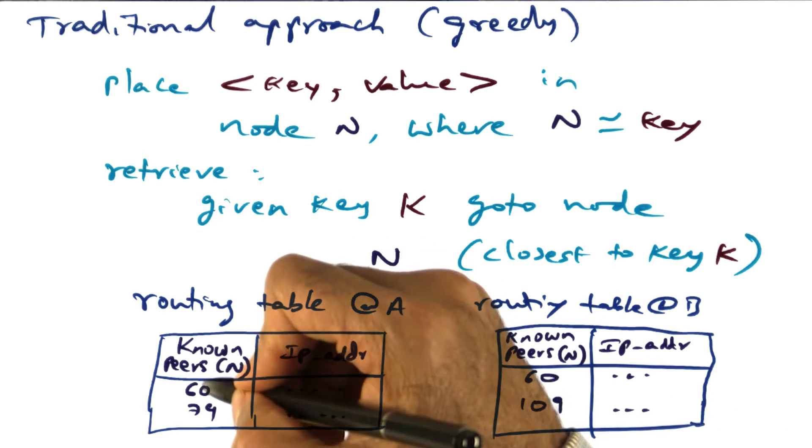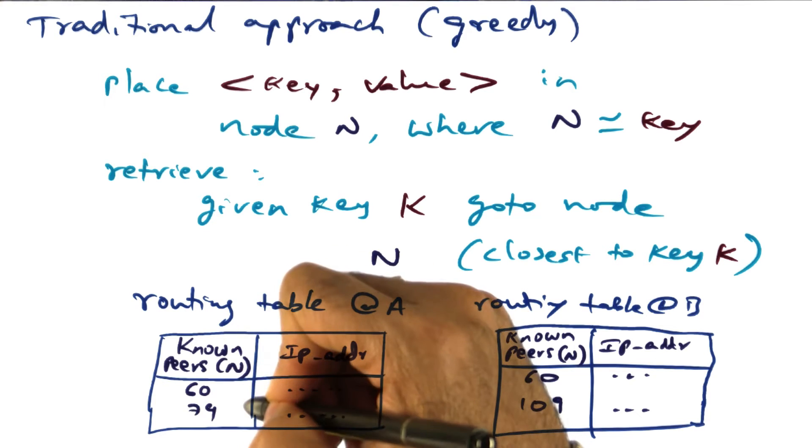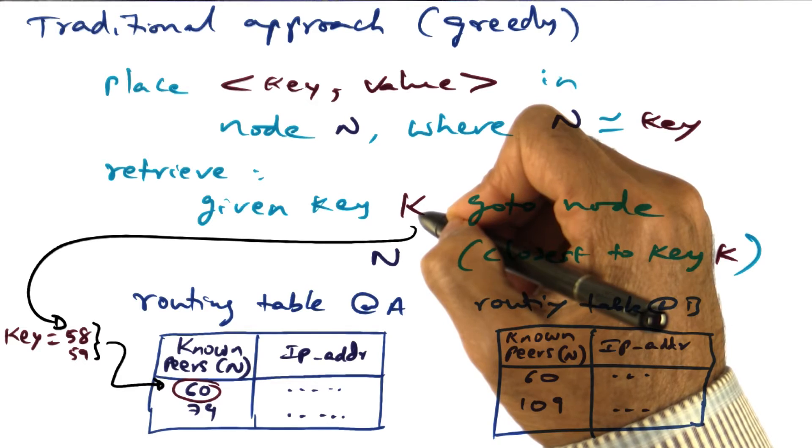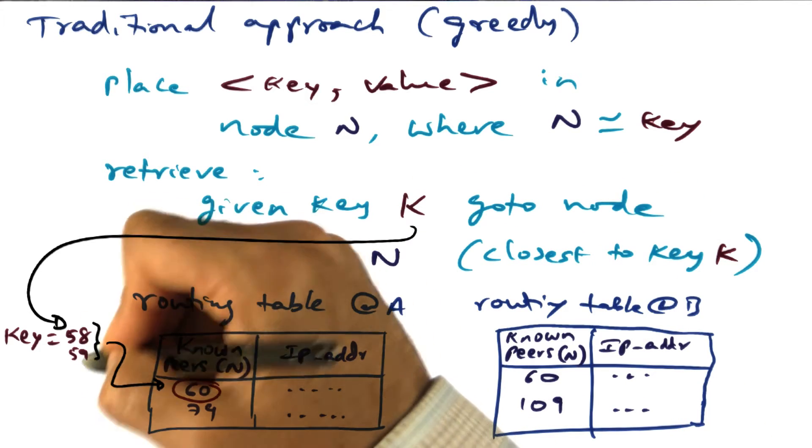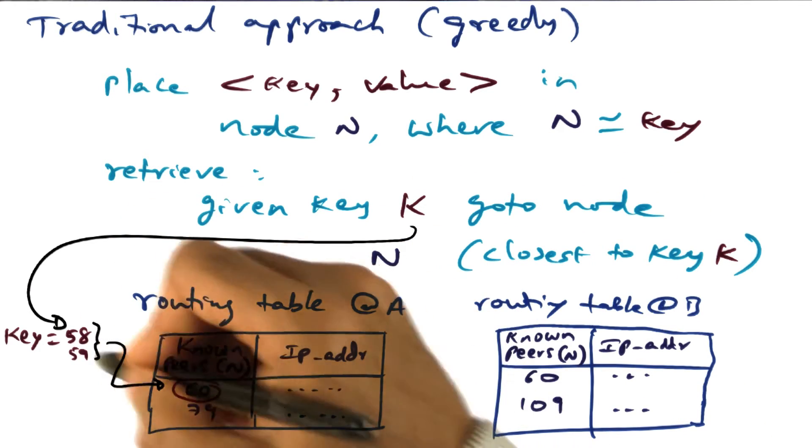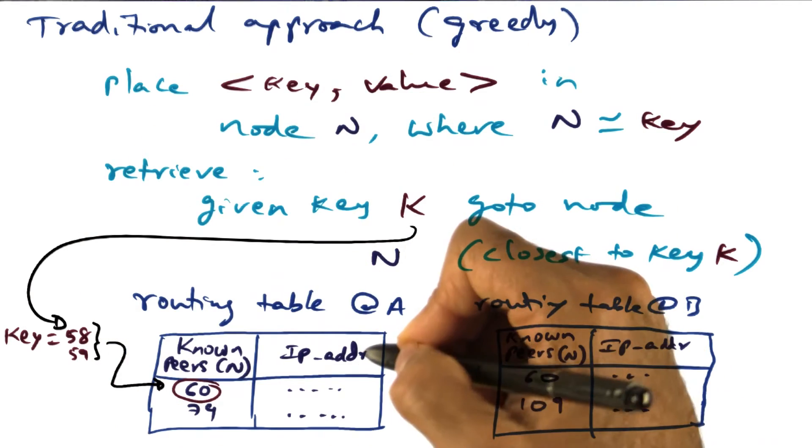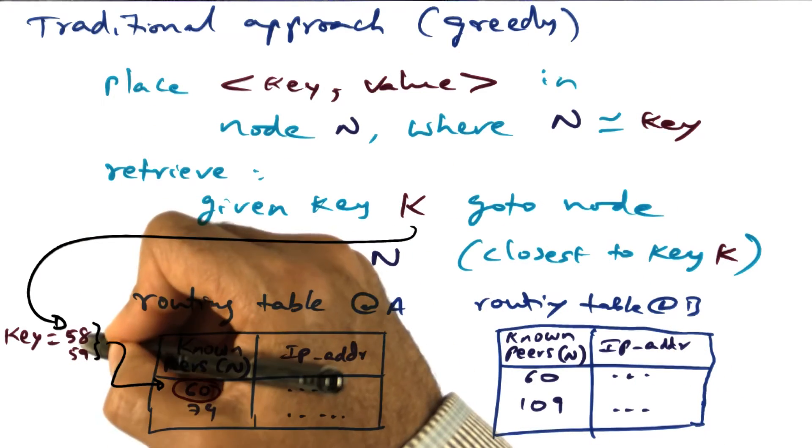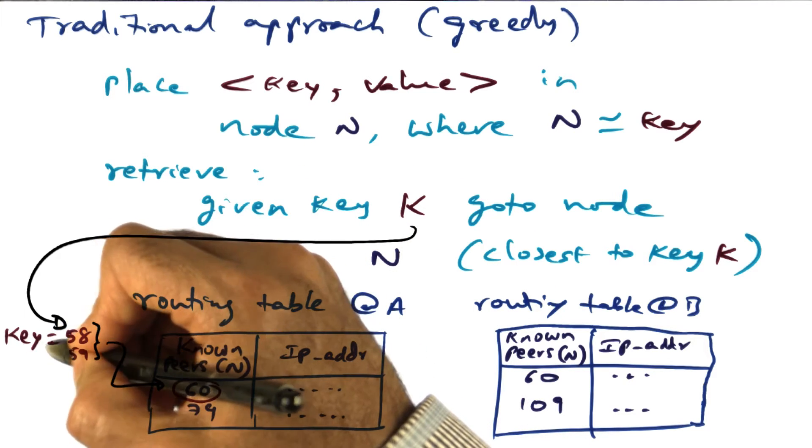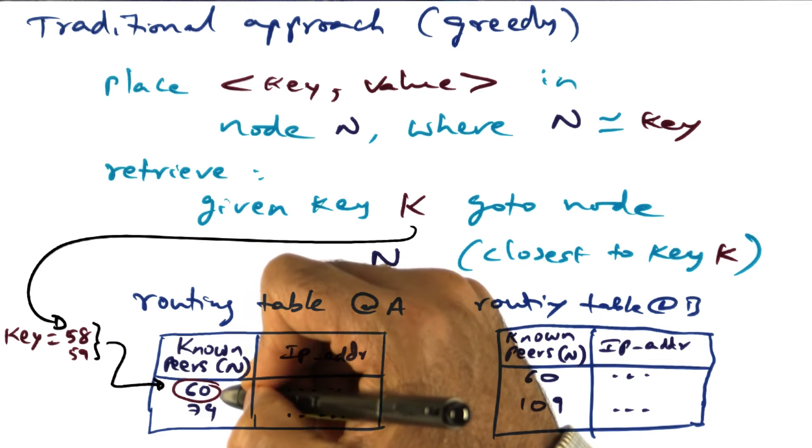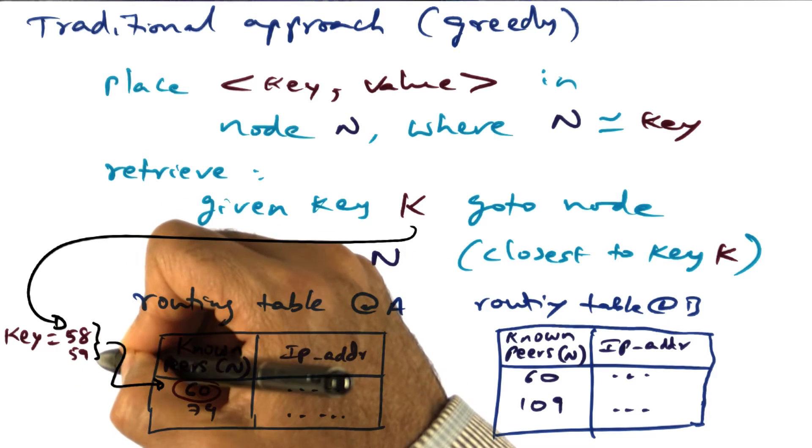What if I want to go to some other node that is not in my routing table yet? For example, let's say that I'm trying to retrieve a key, 58 or 59. I know that 58 or 59, in terms of the DHT construction, it's most likely stored in some node whose ID is very close to this key. Now in my table, I have a node ID 60, close enough to the key that I'm looking for.